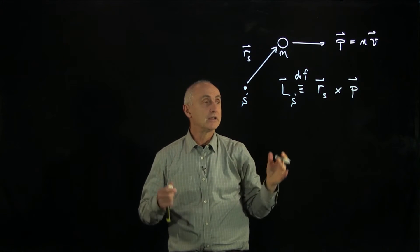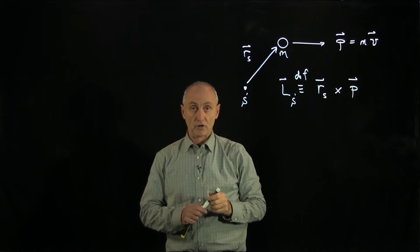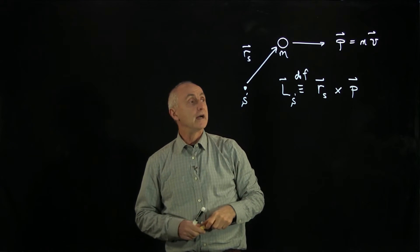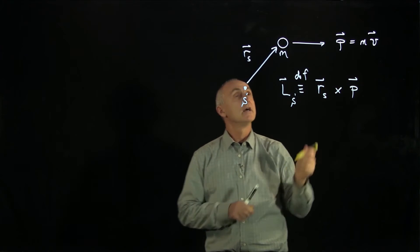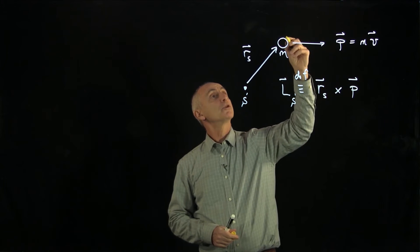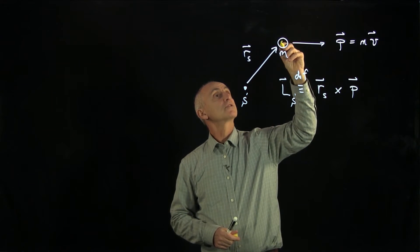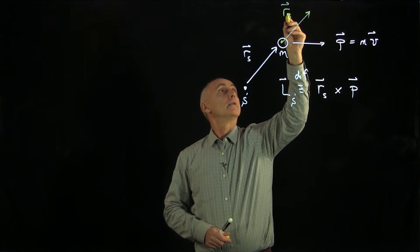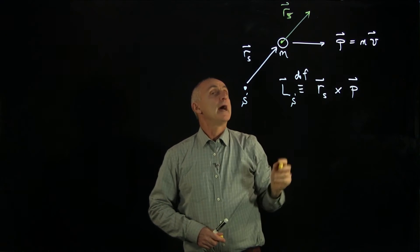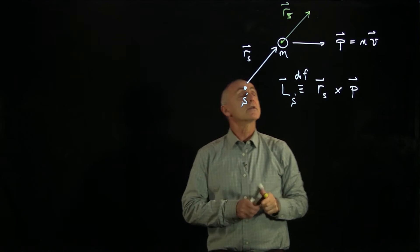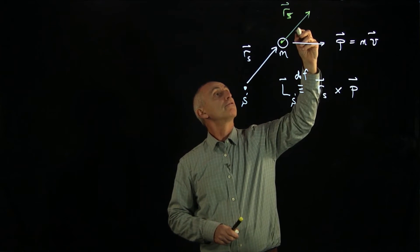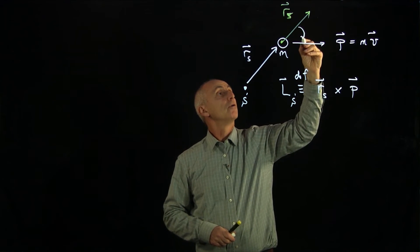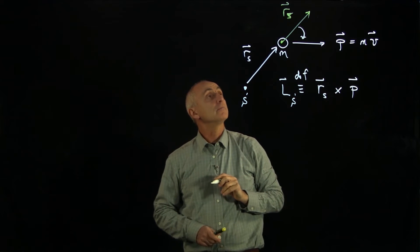Now how do we define the direction of this vector? Well, the way we do that for any vector product is we take the two vectors and we put them tail to tail. So let's start off by drawing the vector rs in that direction. And now when you take a cross product, we draw an arrow from the first vector to the second one. Remember cross and vector products are the same thing.